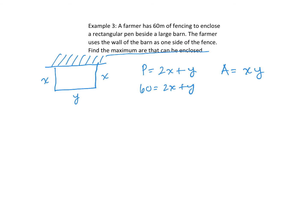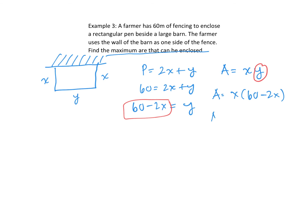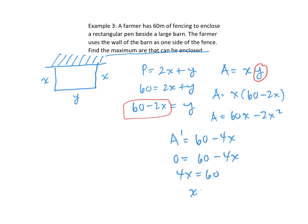Since we want maximum area, we isolate y from the fencing constraint. Y has a single coefficient so it avoids fractions — y equals 60 minus 2x. Substituting into the area formula gives A(x) = x times (60 minus 2x). Expanding and taking the first derivative gives A'(x) = 60 minus 4x. Setting equal to zero and solving gives x equals 15 meters.